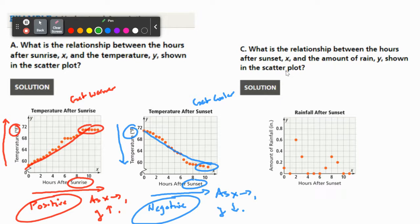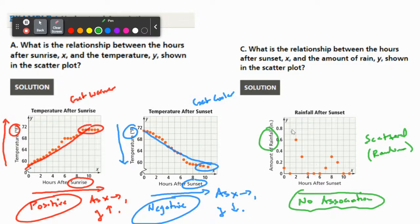And then last but not least, over here, it says, what is the relationship between the hours after sunset X and the amount of rain Y shown in the scatterplot? We're trying to compare hours after sunset and the amount of rainfall. There's really no telling—rain is created by many different things besides just the temperature. You can see right here, there's no pattern. These points are just scattered. There is no trend. So if there's no trend, we're going to say there is no association. As your X is increasing, there is no known pattern between the Y's.